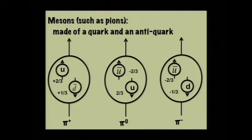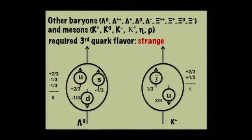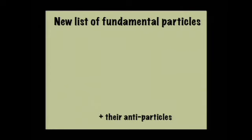So he can build baryons like protons and neutrons, and mesons like pions, out of quarks and anti-quarks. The neutral pion is an up quark and an anti-up quark, or a down quark and anti-down quark — both add up to zero — and it turns out the neutral pion is a mixture of those two. He had to add a third flavor of quark — and here's where strangeness comes in — he called it the strange quark. Once he had done that, he could make all of the baryons and mesons that we saw. So our new list of fundamental particles is, once again, much shorter: the electron and its neutrino, the muon and its neutrino, and three types of quarks.